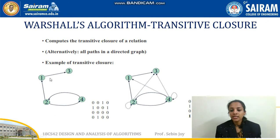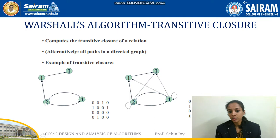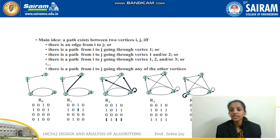For example, a graph is given along with its adjacency matrix and its transitive closure. For example, there is a path 2 to 1 and 1 to 3, so it will be represented as a directed edge 2 to 3 in the transitive closure. Also, if there is a path 2 to 4 and 4 to 2, that means there is a path 2 to 2, which is shown in the transitive closure.